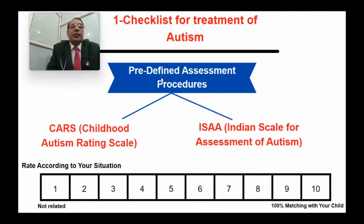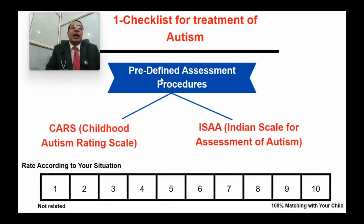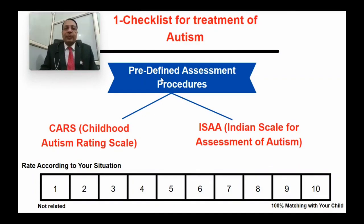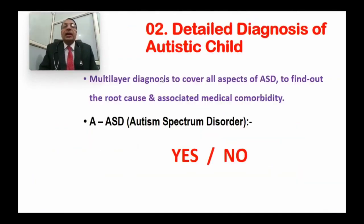The checklist for treatment of autism: the first point is a predefined assessment procedure. If it is implemented for your child, give 10 marks; if not implemented, give 1 mark. The second point is detailed diagnosis of the autistic child.